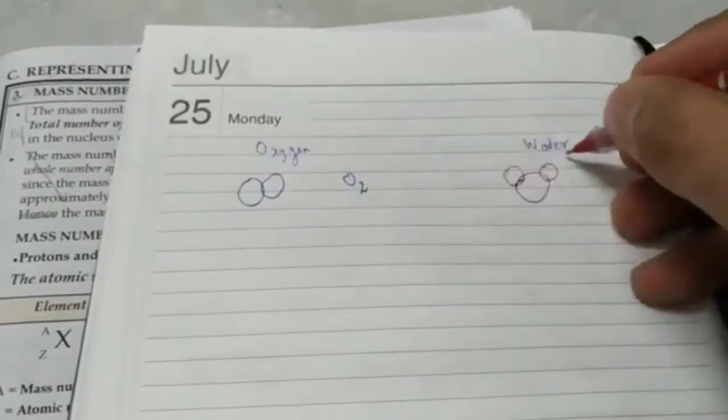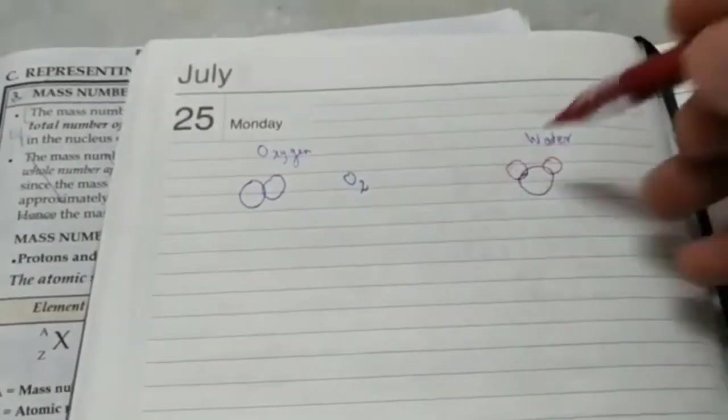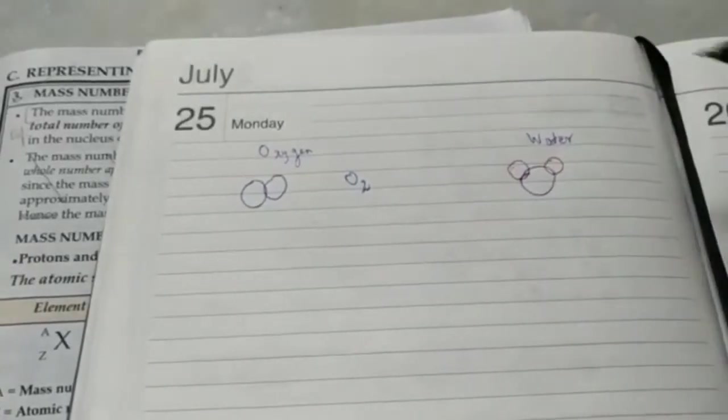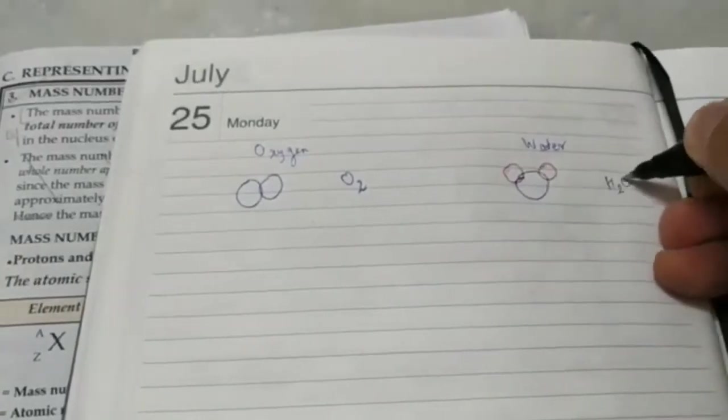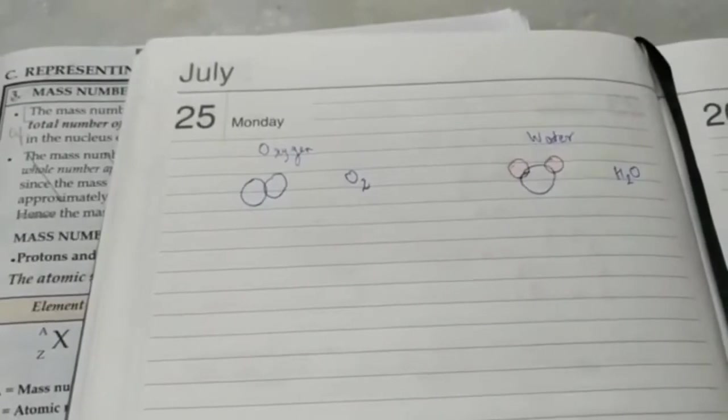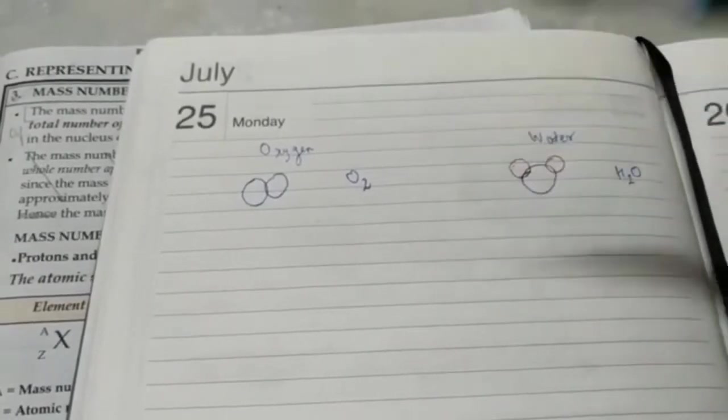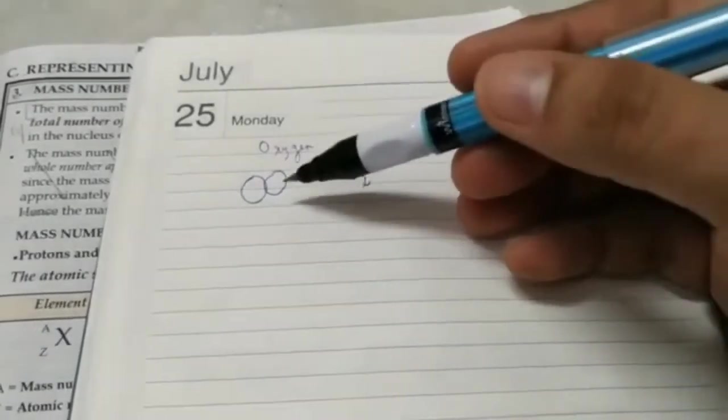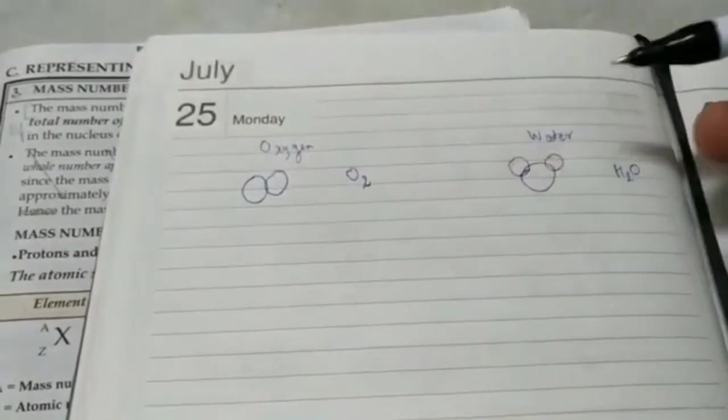This is called Mickey Mouse. I mean, a molecule of water. Let's write this as H2O. But it's a false notion that a molecule is made up of 2 or more atoms. Now, this was a diatomic molecule. This is a triatomic molecule.